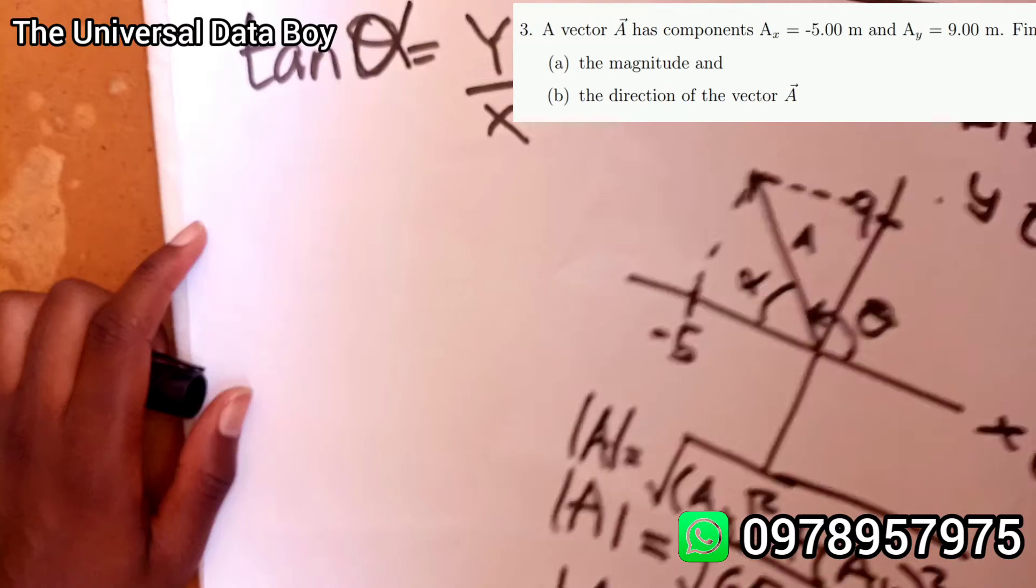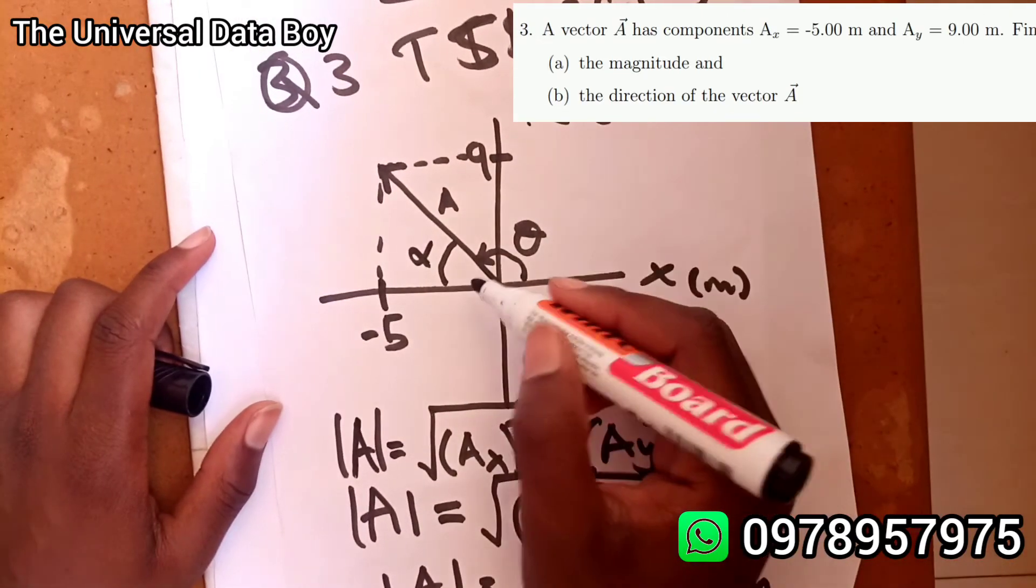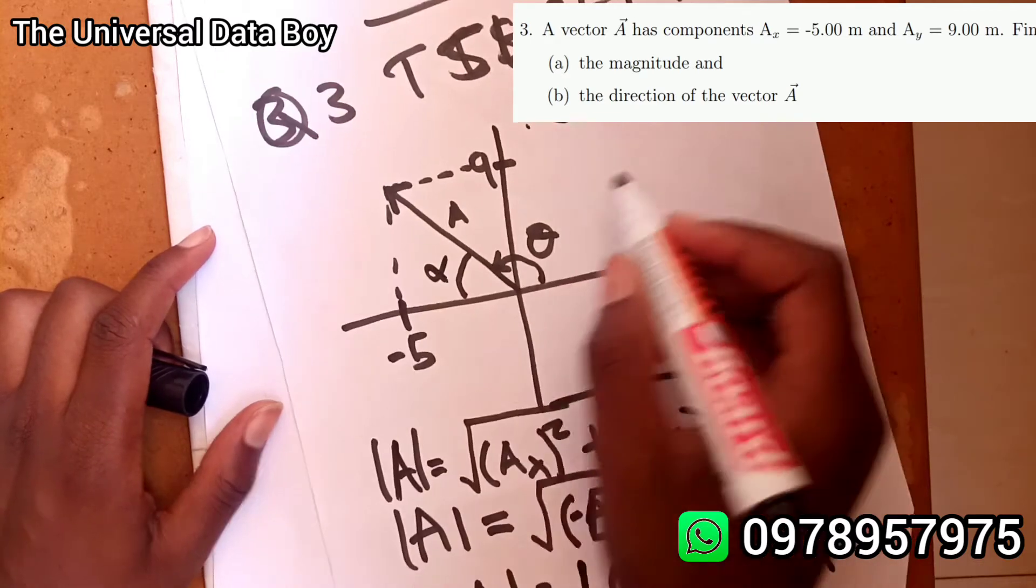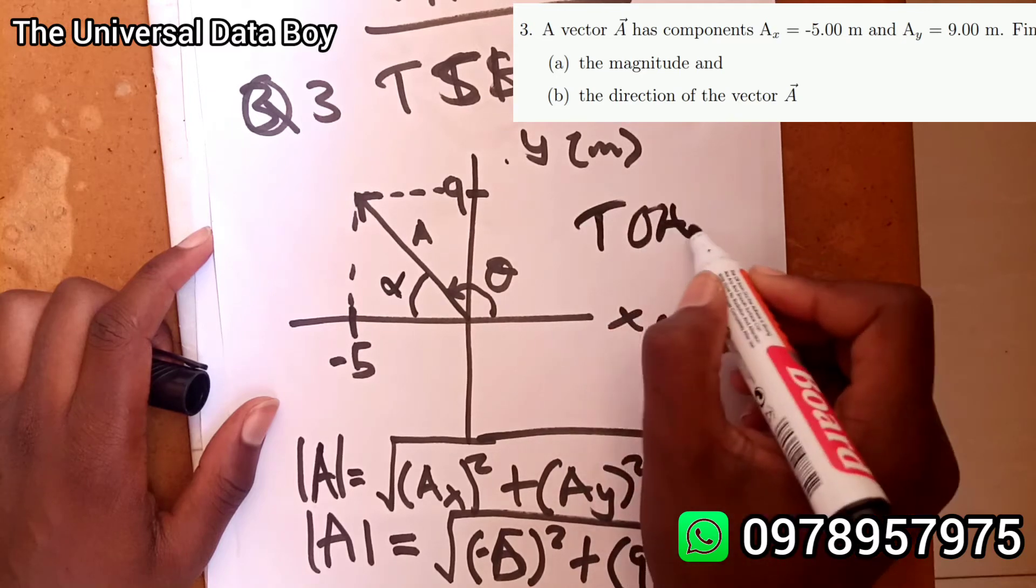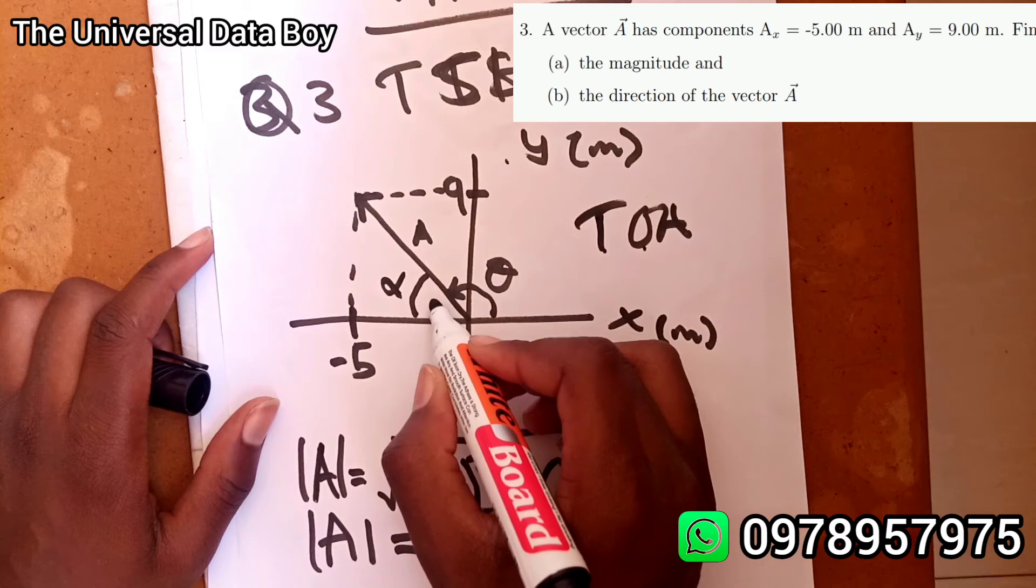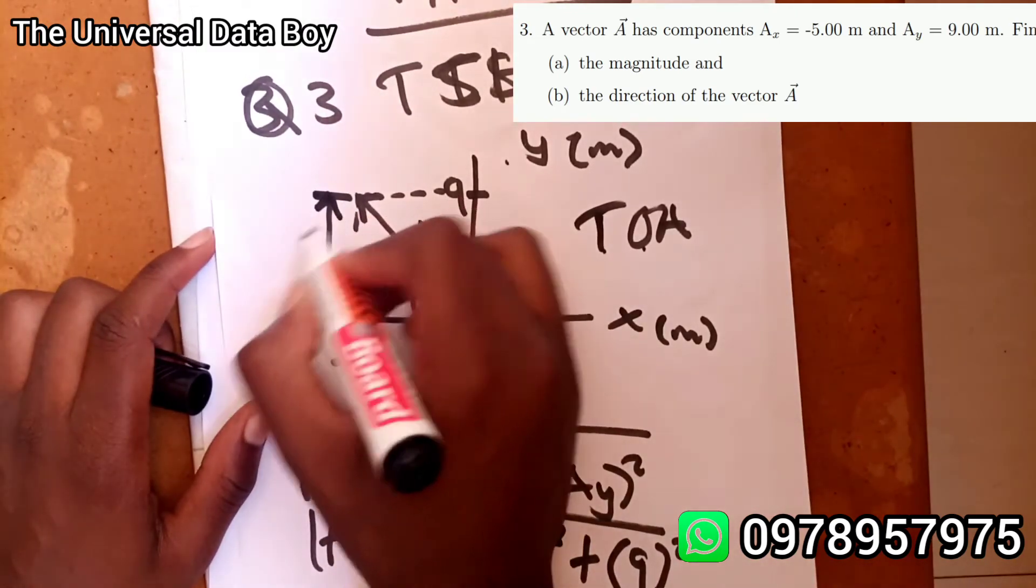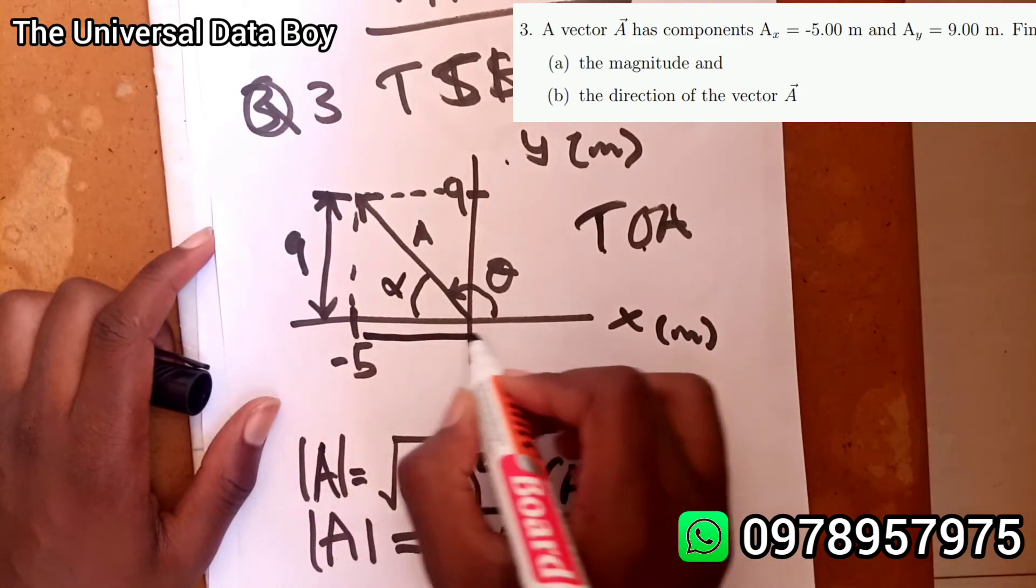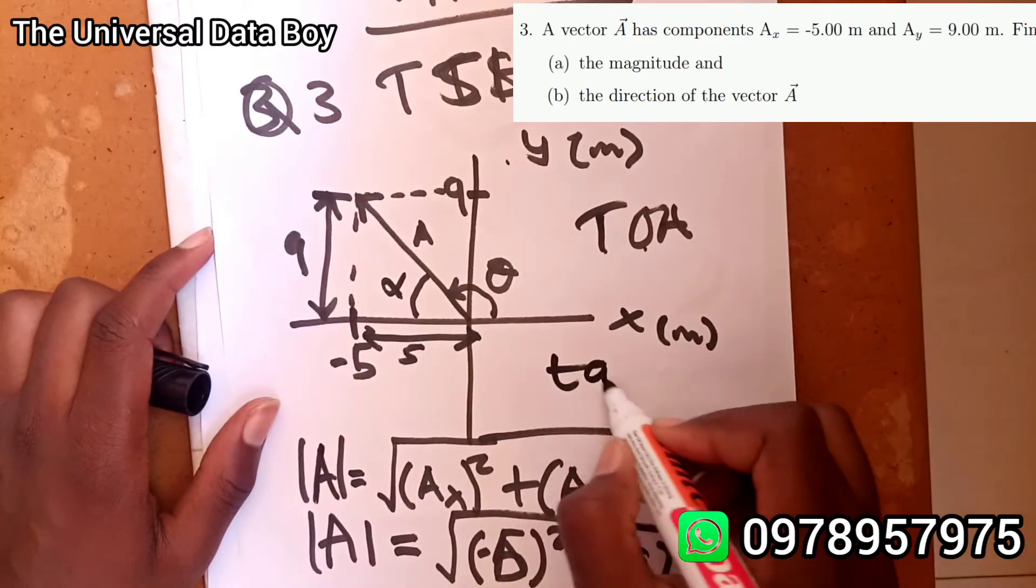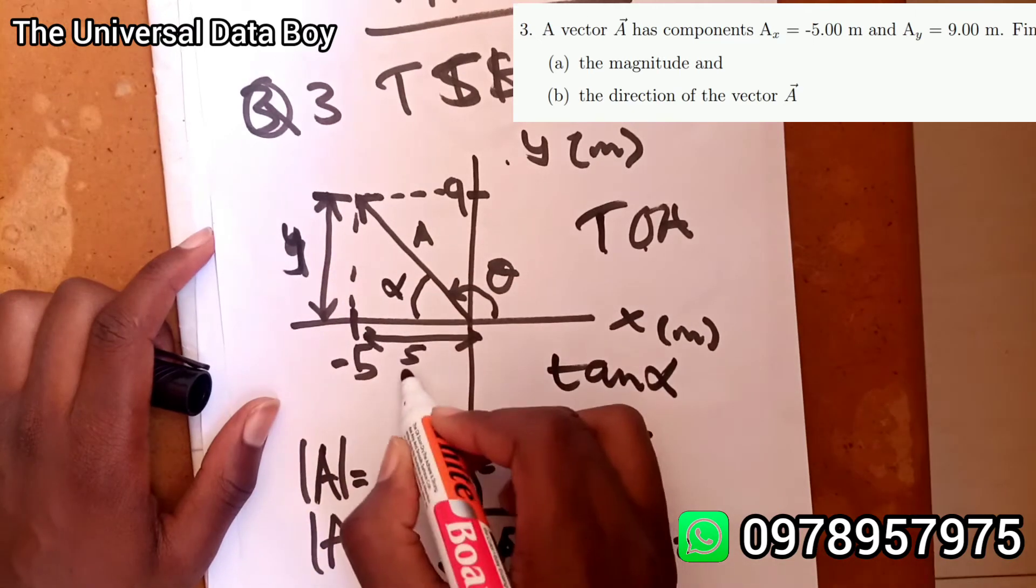Alpha will be equal to whatever is in the y over whatever is in the x. Because when you look at it and you basically review SOHCAHTOA, you're going to have tan equals opposite over adjacent. What's opposite? The opposite of this angle we have 9 which is in the y, then the adjacent we have the 5 there.